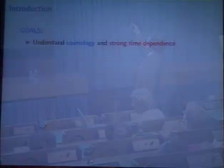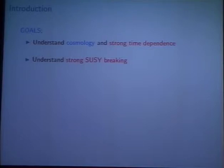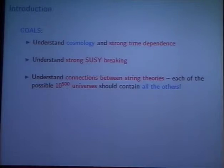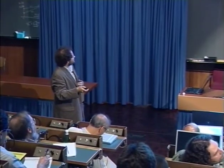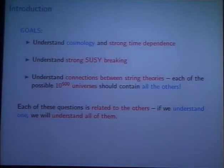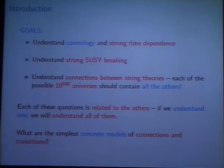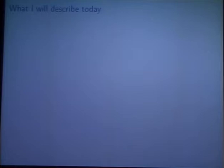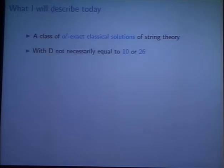So the goals here: we'd like to understand cosmology and in general strong time dependence and strong SUSY breaking. And in general we have 10^100, 10^500 universes or so at least. We'd like to understand in what sense they're all part of the same theory. Each one should know about all the others through transitions. So what does that mean? All these questions are very closely interrelated. So what are the simplest concrete models of connections and transitions among non-supersymmetric string theories?